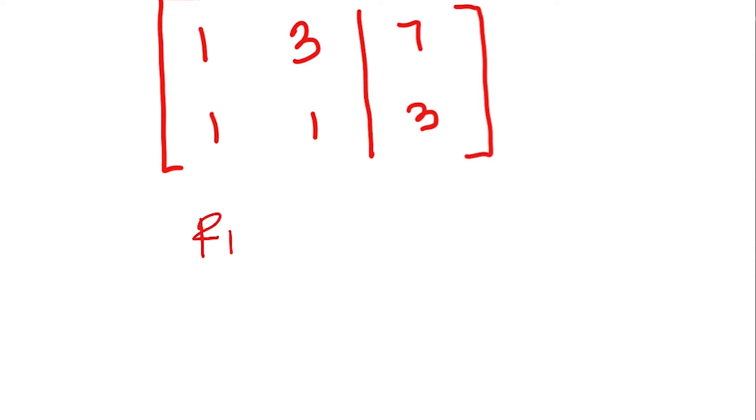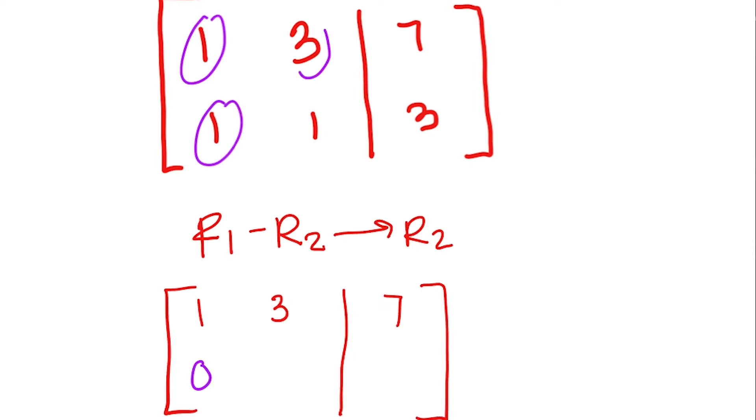So row 1 minus row 2 to change row 2. So row 1 is staying 1, 3, 7, and then we'll have 1 minus 1, which is 0, 3 minus 1, which is 2, and 7 minus 3, which is 4.